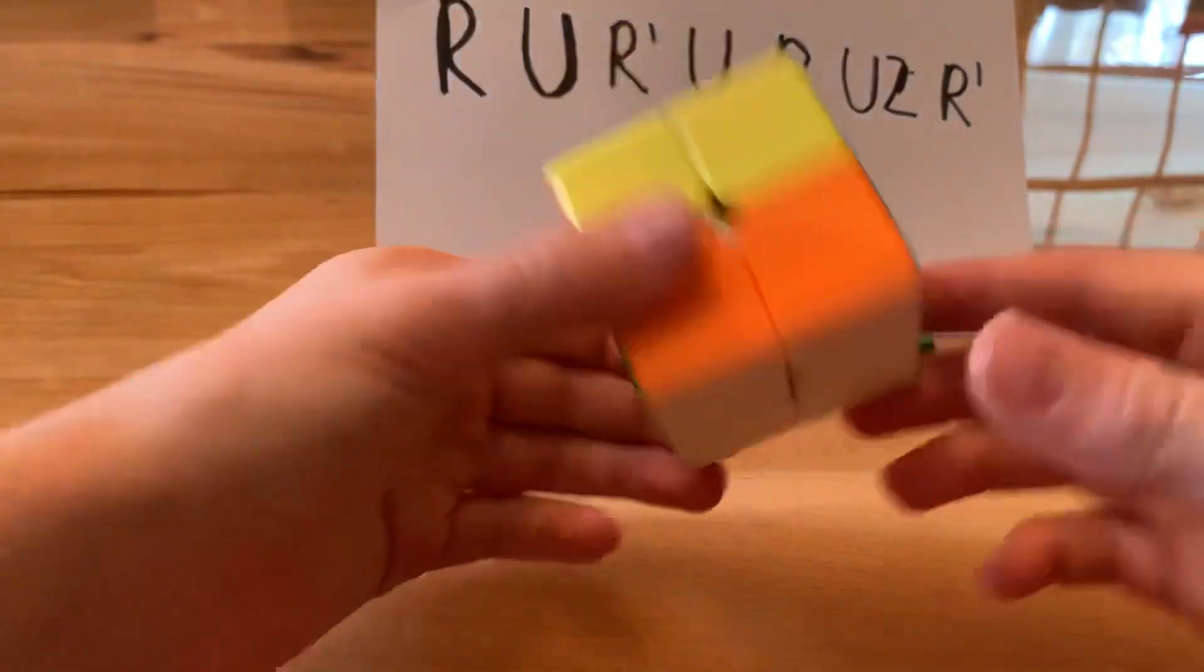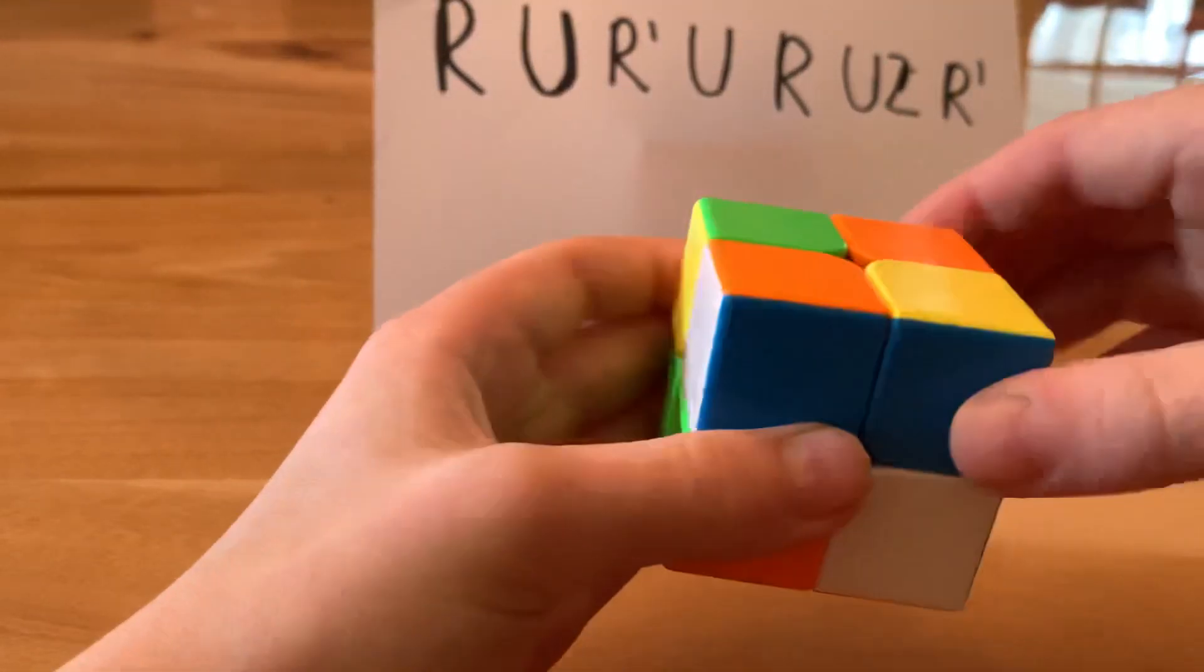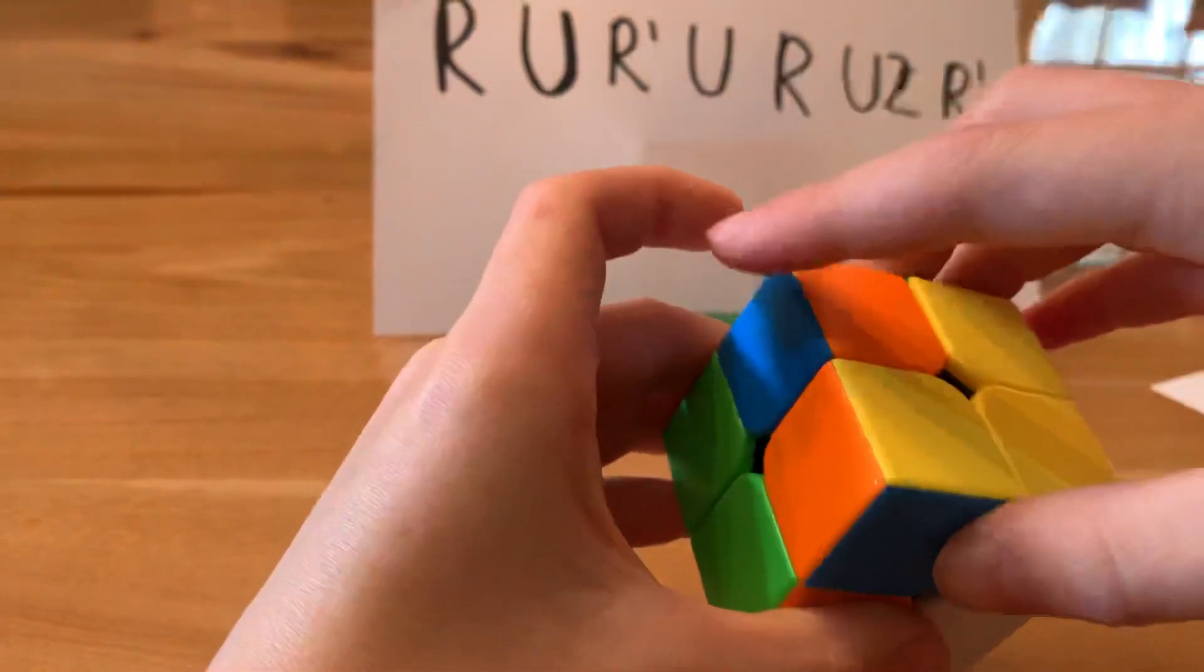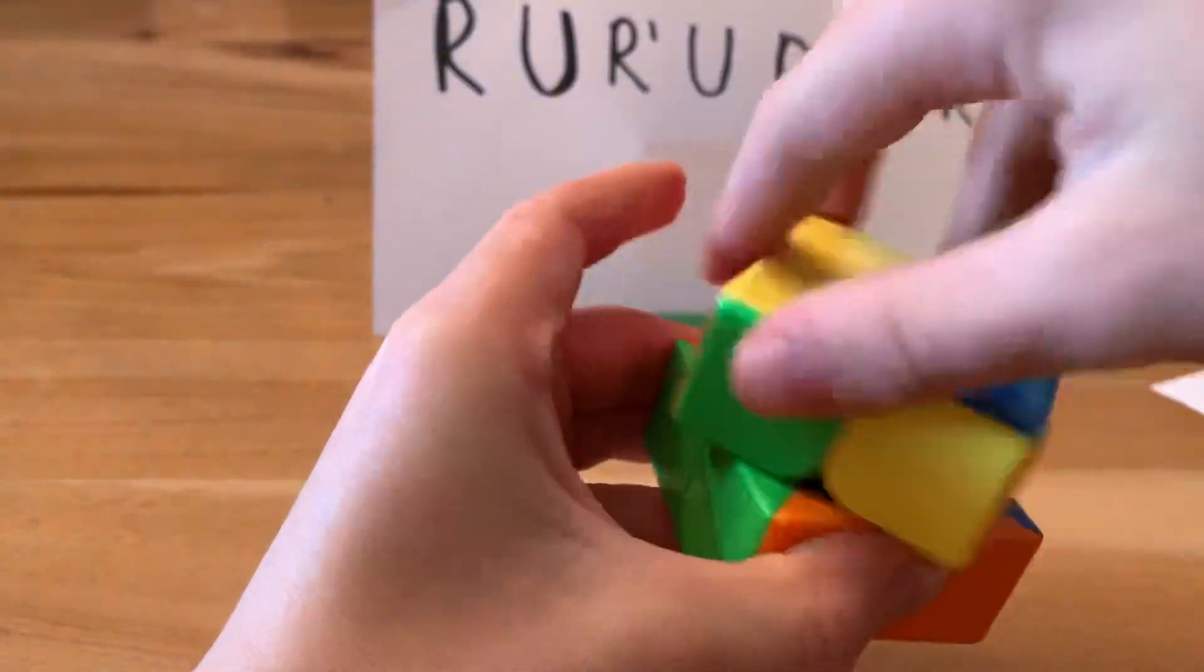So I have none. So I basically just don't move anything and go R, U, R prime, U, R. U2 means that you do it twice. R prime. Now I have those, put those.